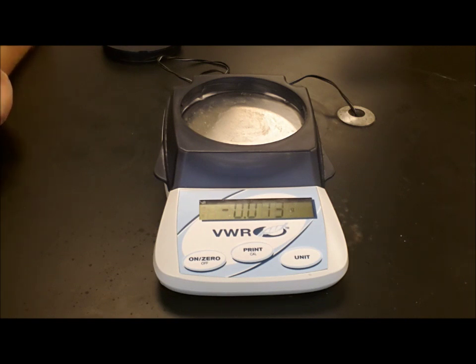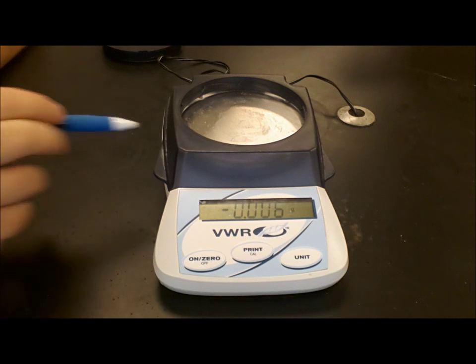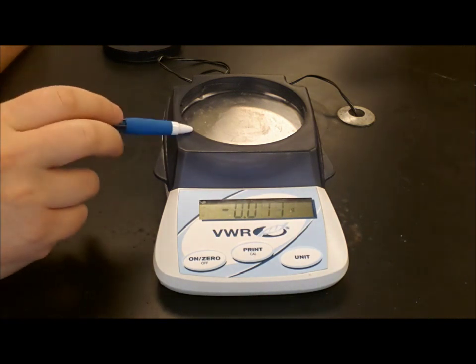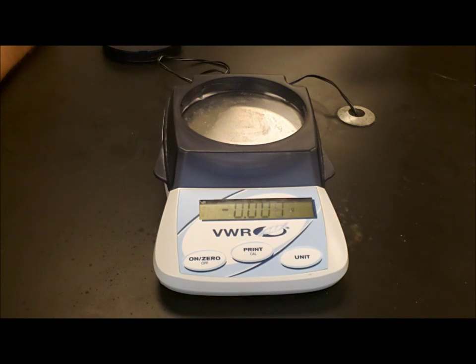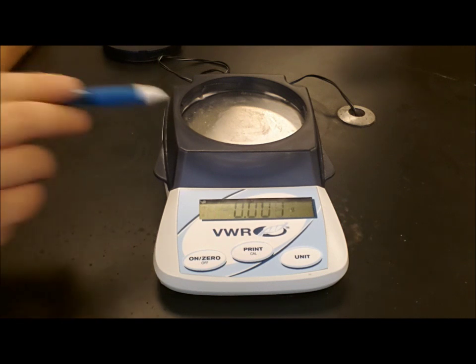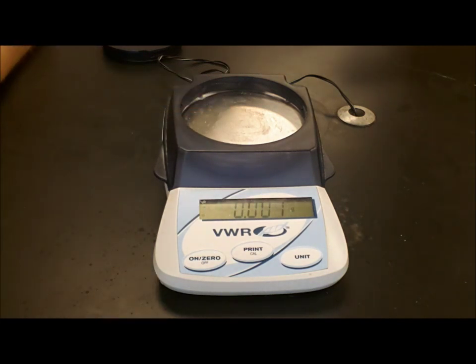Another thing that you can do is you can get your head down on eye level with the balance and that way you're not breathing on the pan itself. That will also cut down on the amount of fluctuating this does. Once you're ready to find the mass of your sample, hit the zero button, wait for it to finish zeroing. If it didn't actually zero, you can hit the zero button again. Then place your sample on the pan and it will give you the mass.